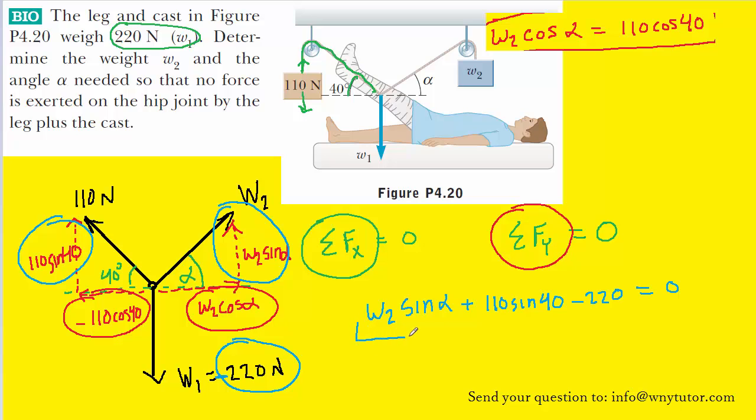As before, it might be a good idea to solve for the unknown portion of this equation. So we'll add 220 to both sides and also subtract 110 sine of 40, leaving us with this equation.